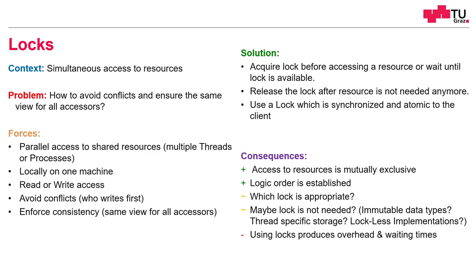Using locks produces overhead and waiting times, which could slow down my application. Although I am programming with multi-threading, waiting times for locks could be the reason I cannot use all my processing power. Also, a problem are race conditions and deadlocks. If I acquire multiple locks in different orders, it could happen that one thread waits for the other thread to unlock a mutex, and that thread waits for a mutex which the first thread already held.